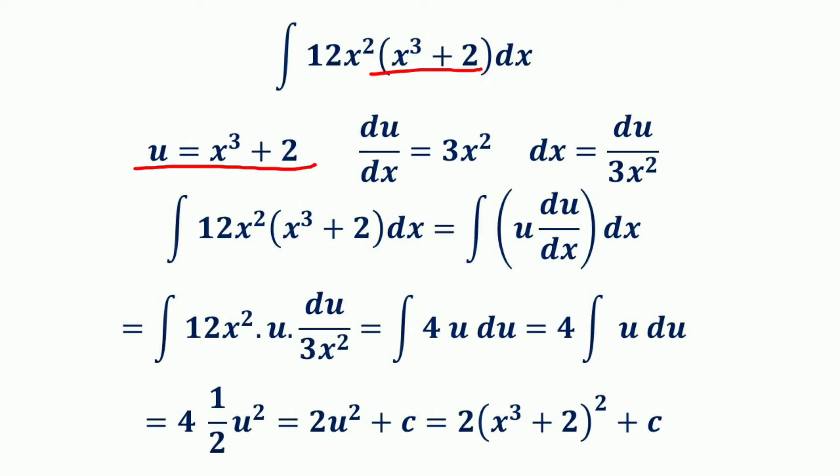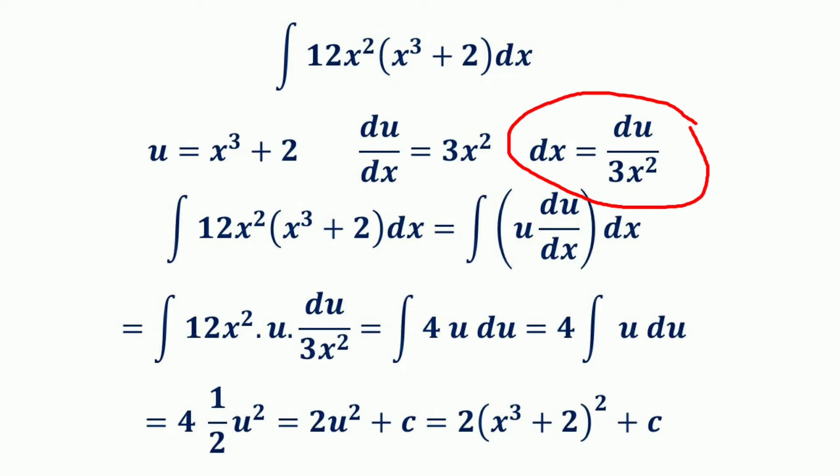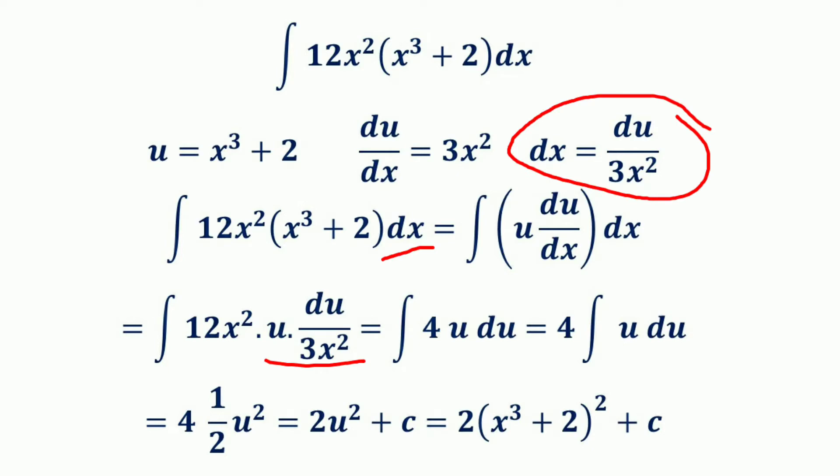Let u equal the function in which the independent variable is raised to the higher power in absolute value. So here u = x³ + 2. Now differentiating u with respect to x gives du/dx = 3x². Solving algebraically for dx gives dx = du/(3x²). We then substitute u for x³ + 2 and du/(3x²) for dx in the original integral.